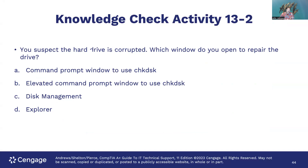Knowledge check: you suspect the hard drive is corrupted — which window do you open to repair it? You can open an elevated Command Prompt window to use Check Disk, since it's used system-wide and requires admin permissions. Disk Management is where you'd check status or create/format volumes, not repair a corrupted file system. File Explorer is an indirect path at best. The correct answer is B — use an elevated Command Prompt window to run CHKDSK. Disk Management and Explorer cannot directly repair a corrupted file system.